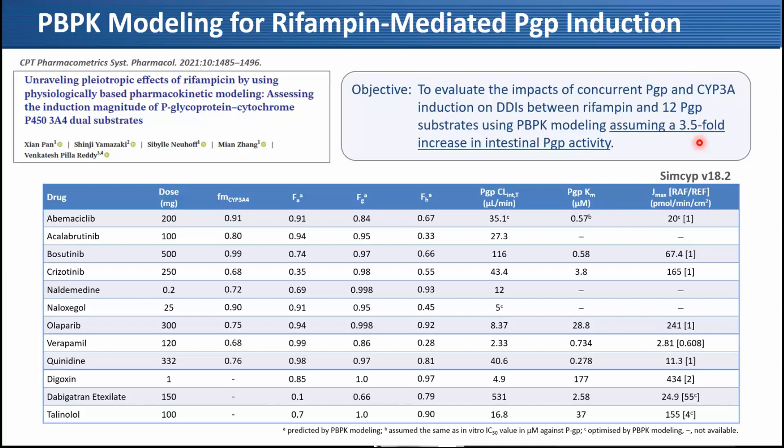These are the 12 P-gp substrates listed, with FM-CYP3A values included. Nine are CYP3A/P-gp dual substrates and three are P-gp-only substrates. We used in vitro P-gp KM and Jmax values for most compounds, but for three compounds without in vitro KM and Jmax we used P-gp intrinsic clearance values. We covered a wide range of intrinsic clearance from 2 to 500.